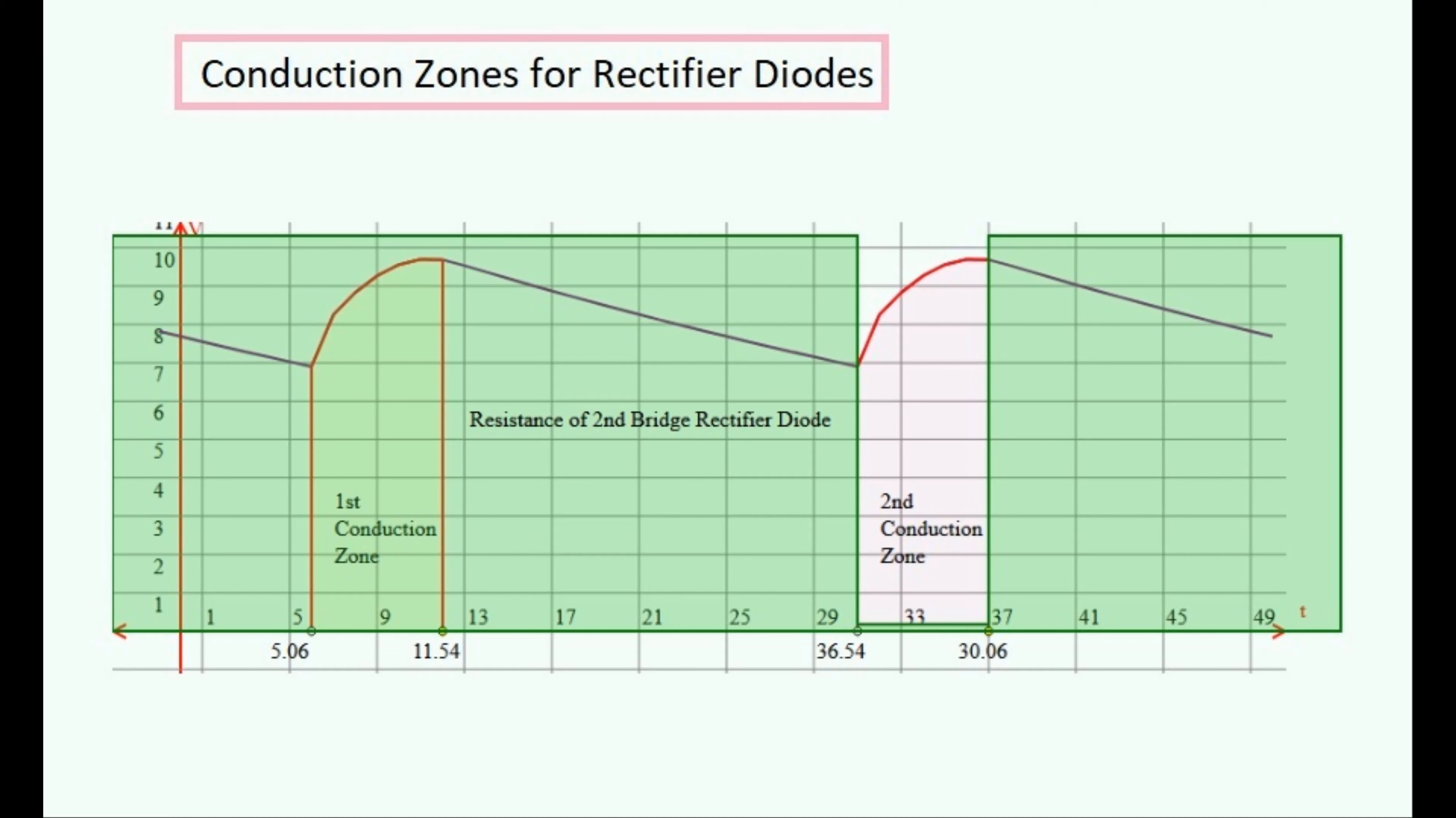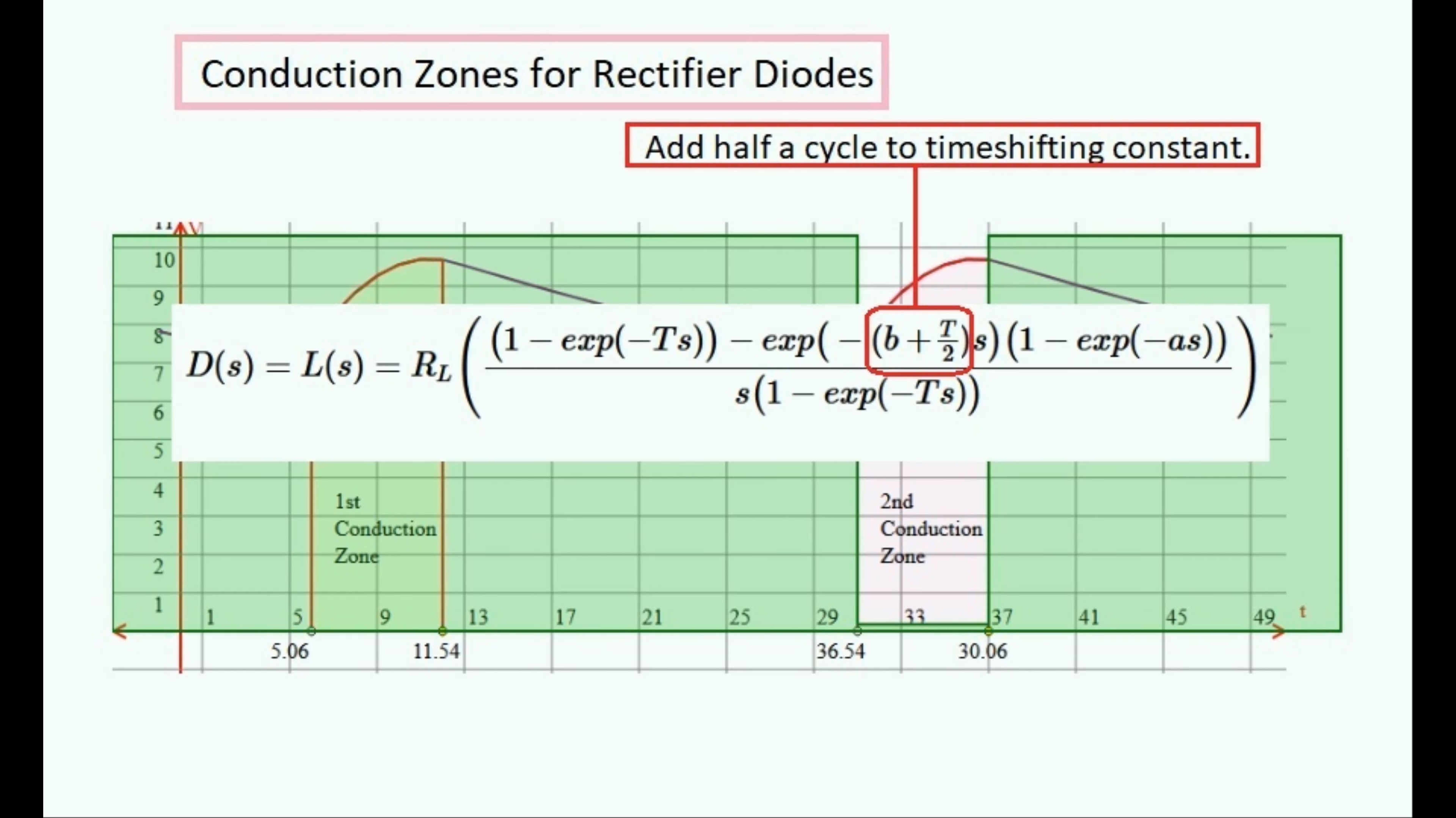Now to find a Laplacian for the second diode, its resistance looks like this green function. It looks just like the equation for the first diode only time shifted by half the period T.